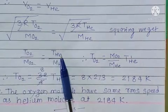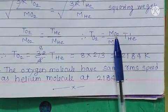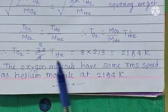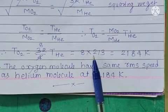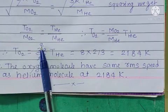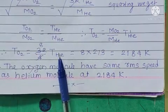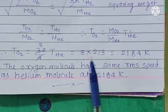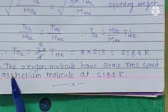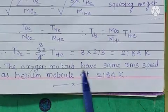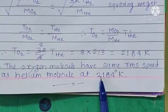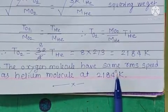So T of O2 equals M of O2 upon M of He times T of He. M of O2 is 32, M of He is 4, T of He at STP is 273. So 32 upon 4 times 273 equals 8 into 273, which equals 2184 Kelvin. In this way, the oxygen molecule will have the same RMS speed as helium molecule at 2184 Kelvin.